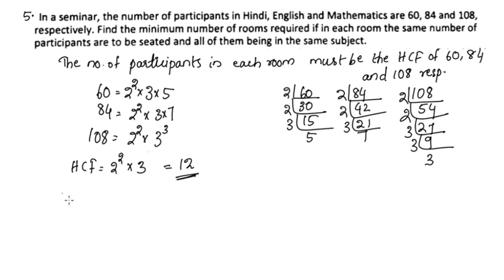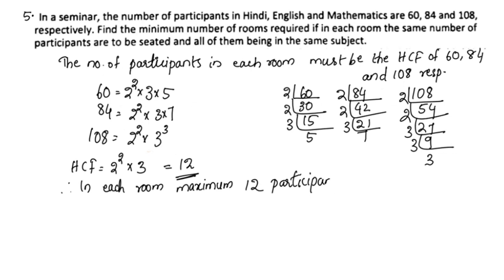Therefore, in each room, maximum 12 participants can be seated. So there are 12 participants in each room, and we now find the minimum number of rooms.